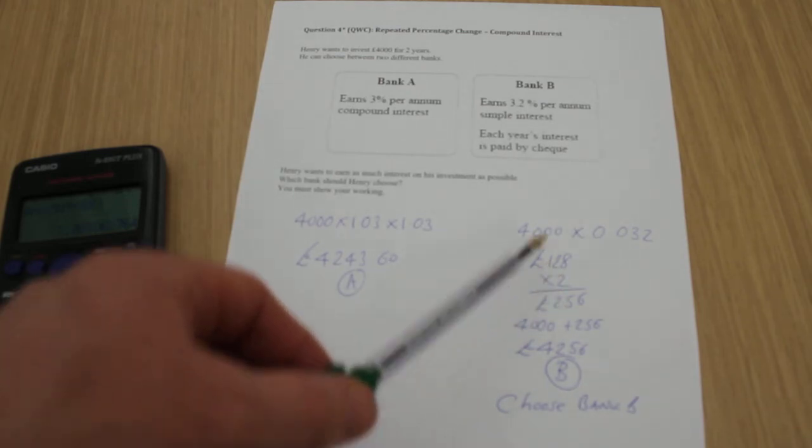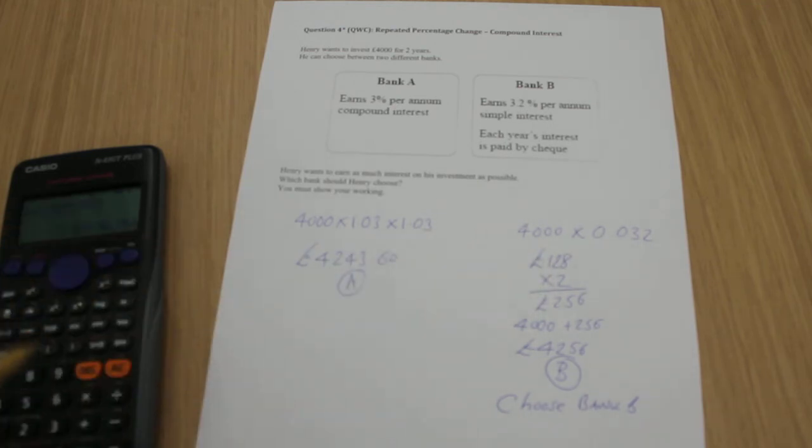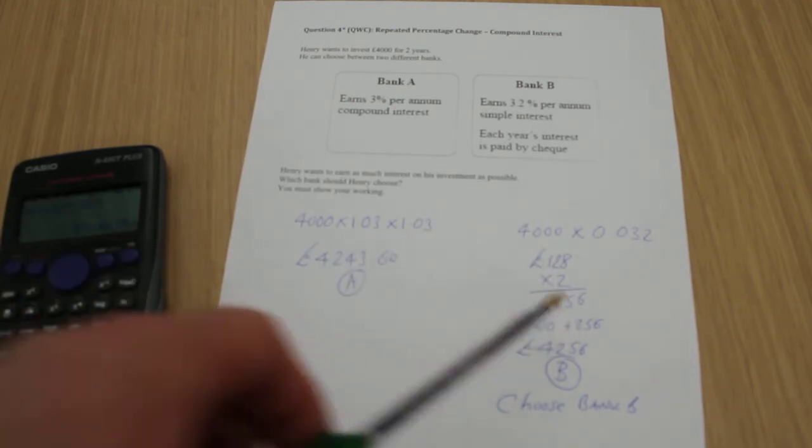I double that because I don't get interest on interest, I just literally take the first year's interest and multiply it by 2. That's £256.